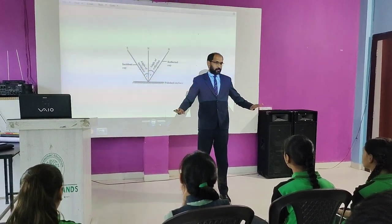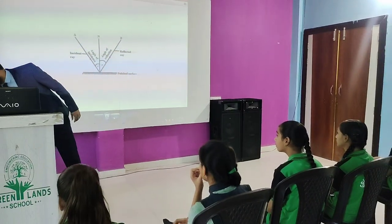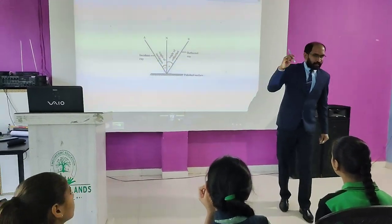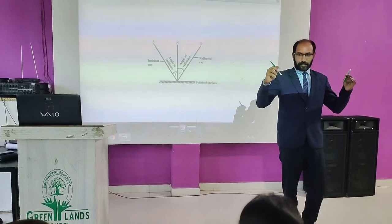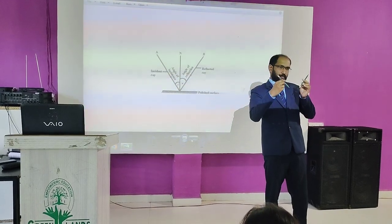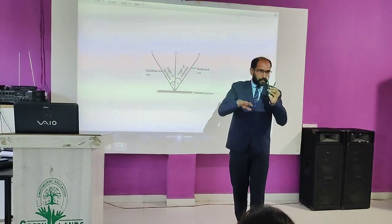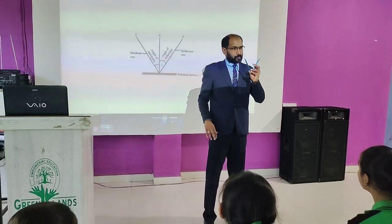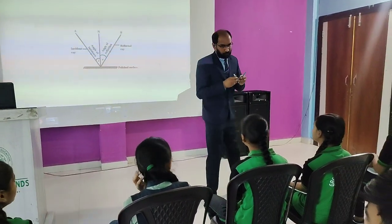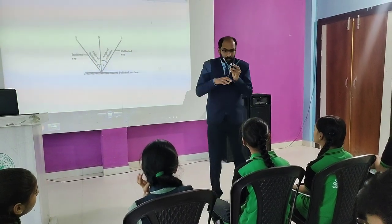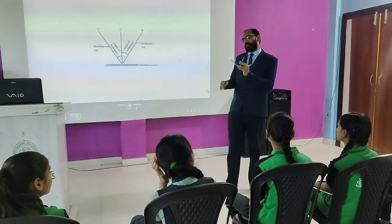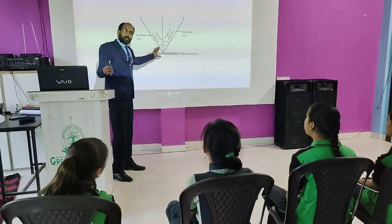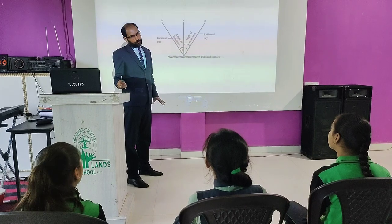Think of it this way: here the incident ray is coming and the reflected ray goes out — if the surface is smooth, then these three — the incident ray, the normal, and the reflected ray — are all lying in the same plane. That is the second law. The angle of incidence equals the angle of reflection, and they lie on the same line. Without these laws, the image will not be formed.